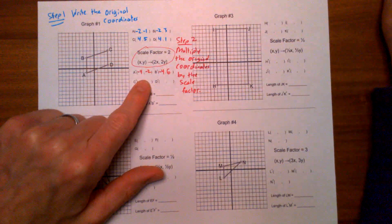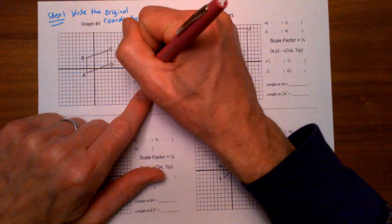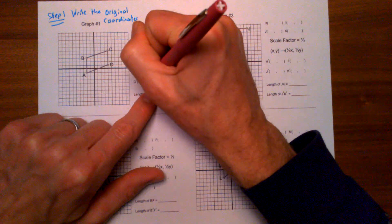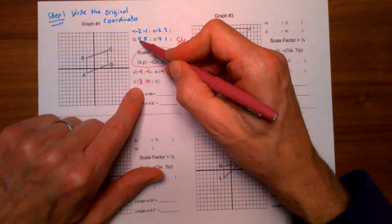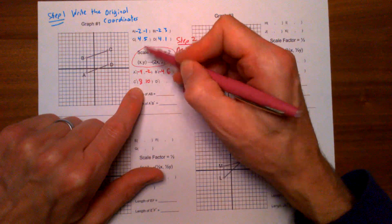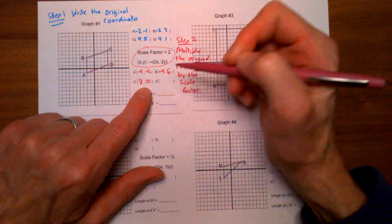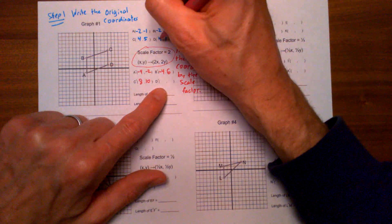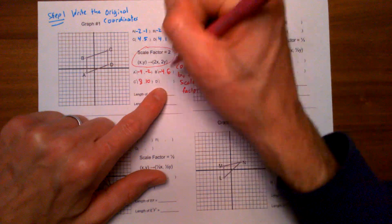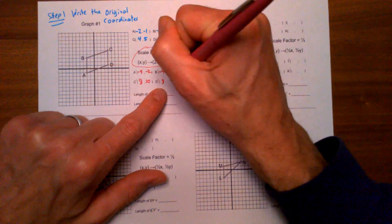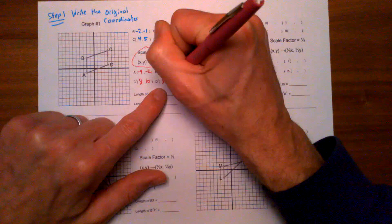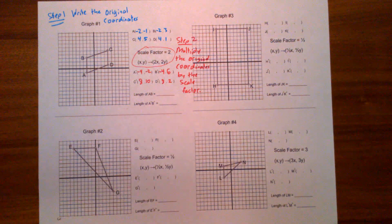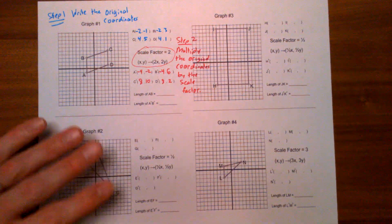For point C: 4 × 2 = 8 and 5 × 2 = 10, so C' is at (8, 10). For point D: 4 × 2 = 8 and 1 × 2 = 2, so D' is at (8, 2). Now we are ready for step three.